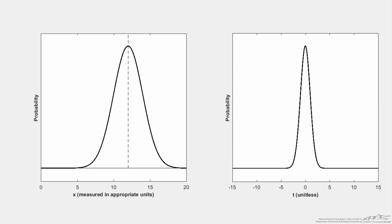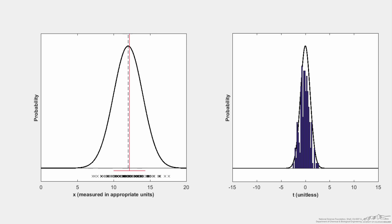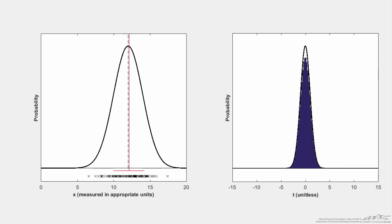I can also simulate collecting a hundred measurements per sample, giving ninety-nine degrees of freedom. There are my hundred sample points on the left. As I keep running this, look at how close the sample mean is in general to the population mean, and look at the consequence for the t-distribution — now shown with ninety-nine degrees of freedom. The tails come in very tightly, mainly because the sample mean is so close to the population mean in general. Continuing to run gives a t-distribution with ninety-nine degrees of freedom, which is essentially a normal distribution.